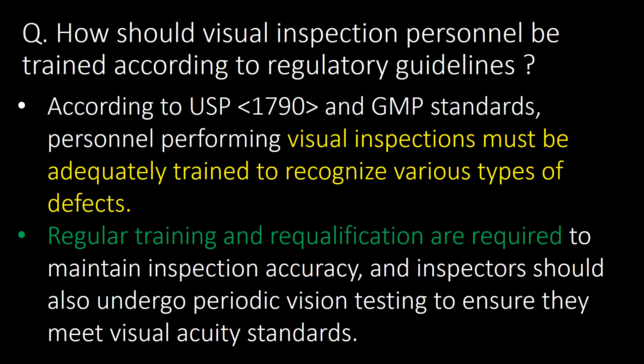How should visual inspection personnel be trained according to regulatory guidelines? According to USP chapter number 1790 and GMP standards, personnel performing visual inspections must be adequately trained to recognize various types of defects. Regular training and re-qualification are required.